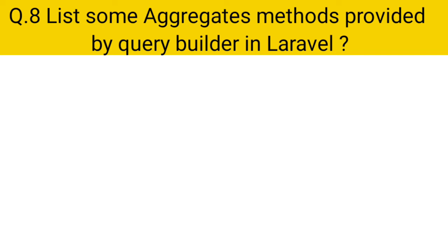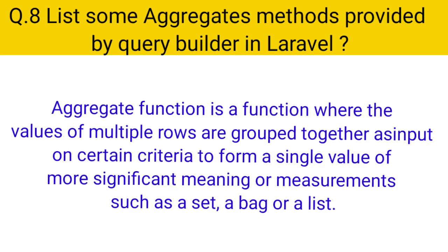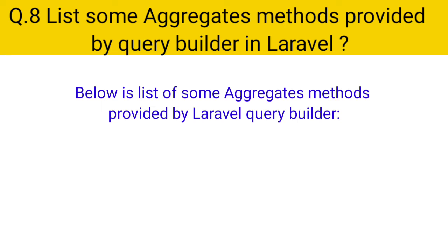Question 8: List some aggregate methods provided by the query builder in Laravel. Answer: An aggregate function is a function where the values of multiple rows are grouped together on certain criteria to form a single value of more significant meaning, such as a sum or average. Below is a list of some aggregate methods provided by the Laravel query builder.